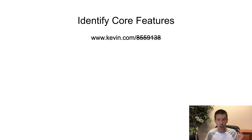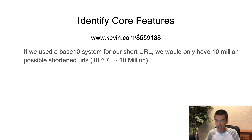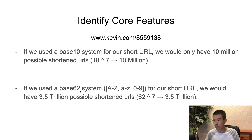Let's identify the core features. We'll call our service kevin.com and make the shortened URL seven characters long — that's an arbitrary number for now. If we use only digits zero through nine, that's base 10, giving us 10 to the power of 7, which is 10 million possible shortened URLs — not really a lot. Instead, if we use base 62 — capital A through Z, lowercase a through Z, plus digits zero through nine, similar to a license plate — we have 62 possible characters per space.